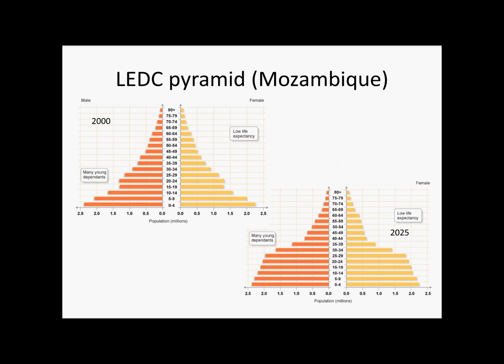What does an LEDC pyramid look like? Well, here's Mozambique's one. If you look at the 2001 graph at the top, it's got a high birth rate — you can see this because the bottom bar is huge. There's a high infant mortality rate because all the babies are dying; it's about a quarter of a million less on each side. The workforce is quite small — about half the size of the birth rate. The death rate is also quite high, because above 65 there's practically nobody there, meaning low life expectancy. The conclusions we can draw are poor healthcare, poor family planning, and a small workforce meaning not much economic growth.